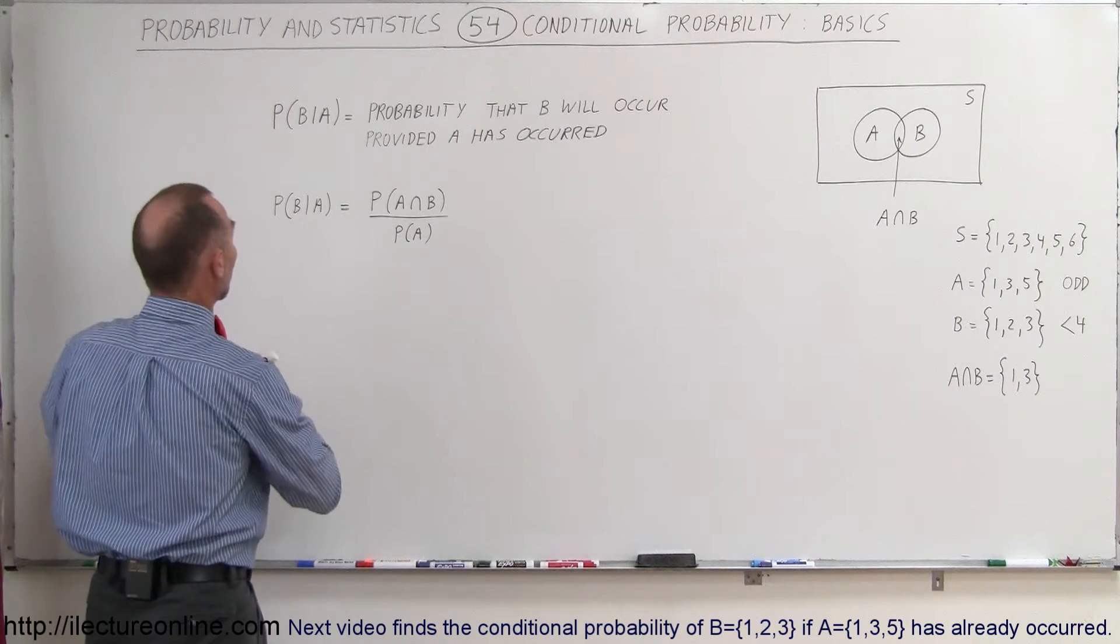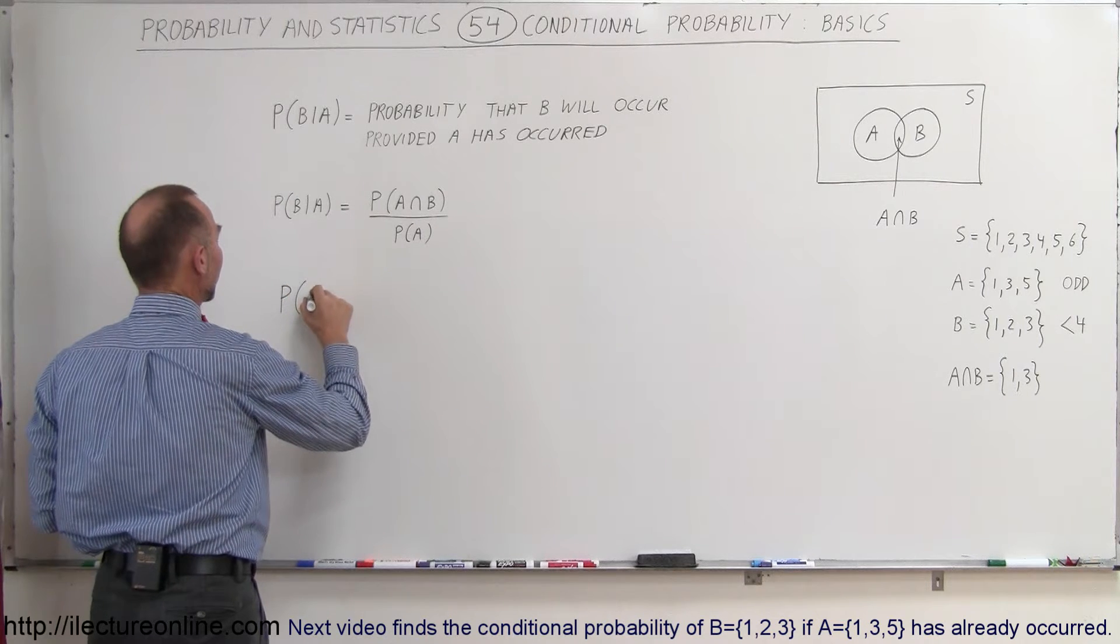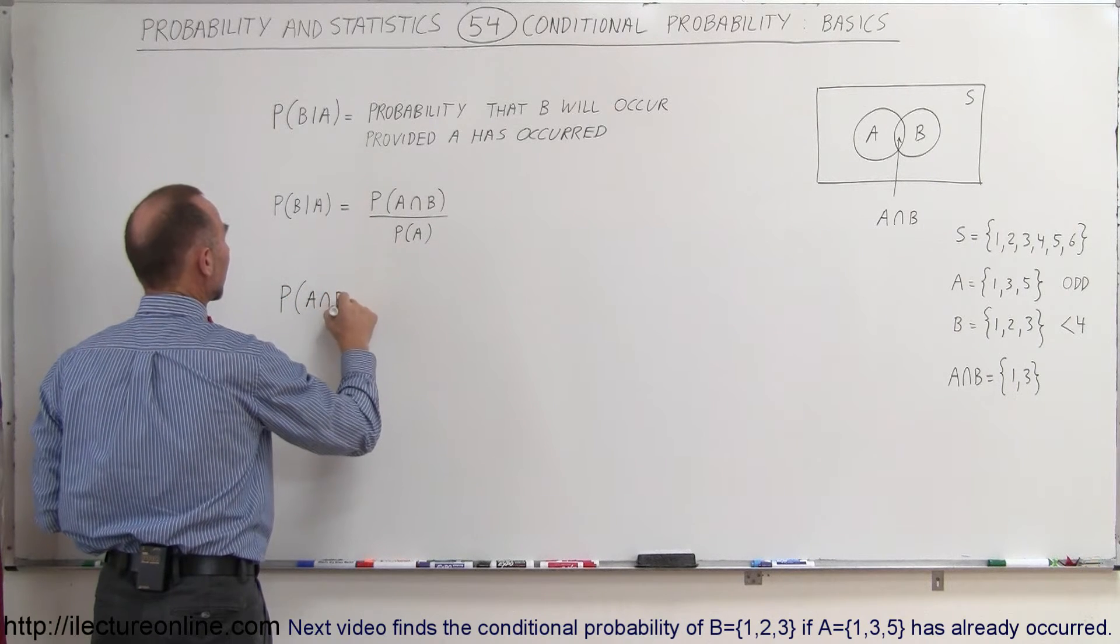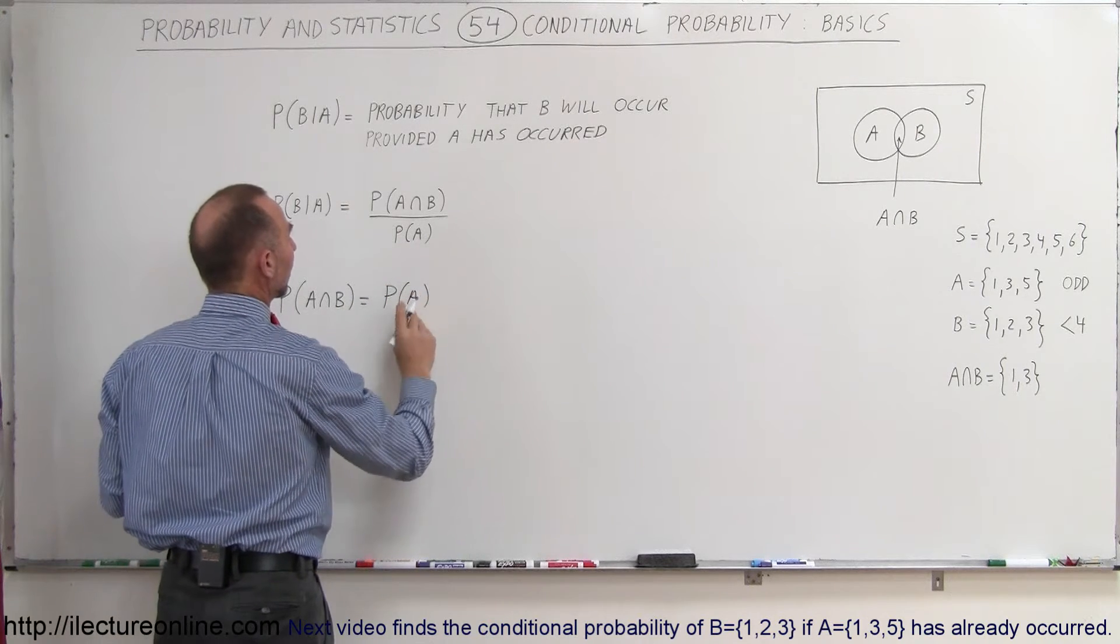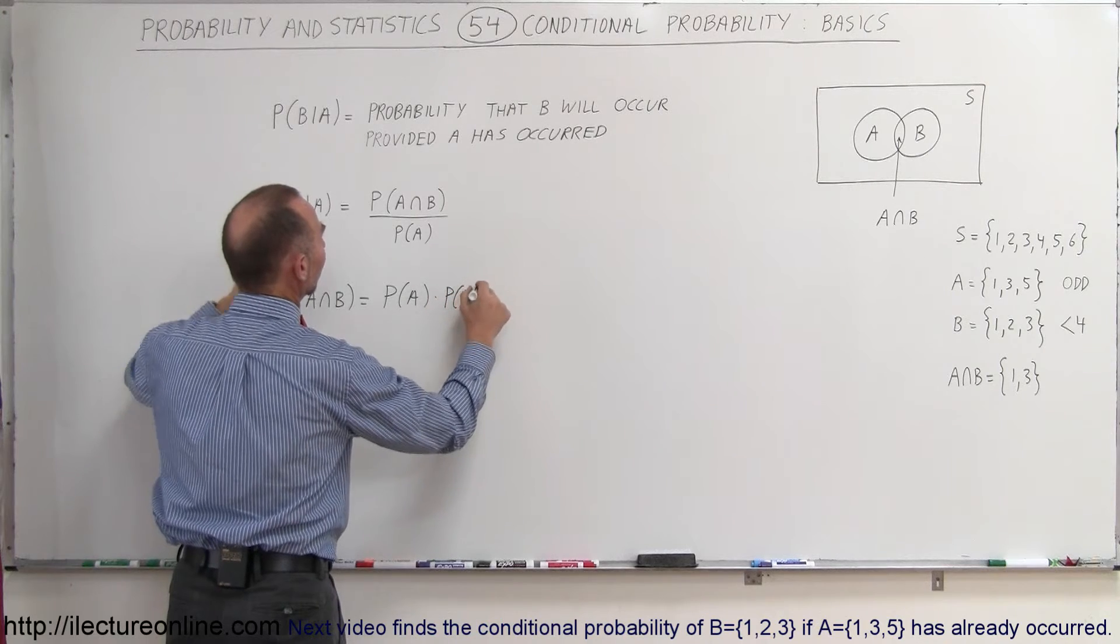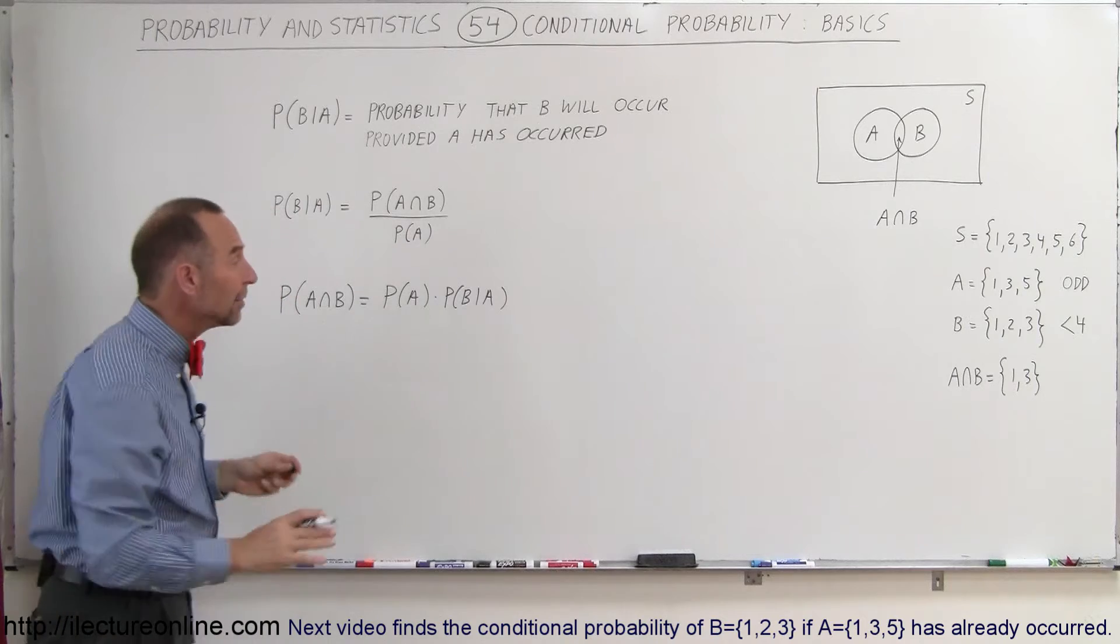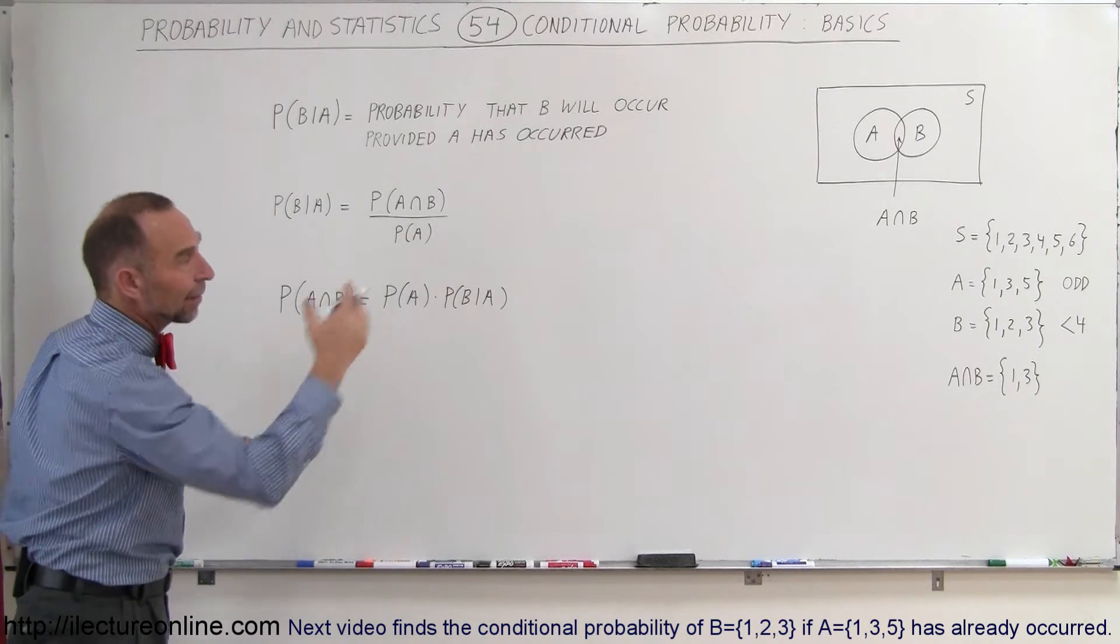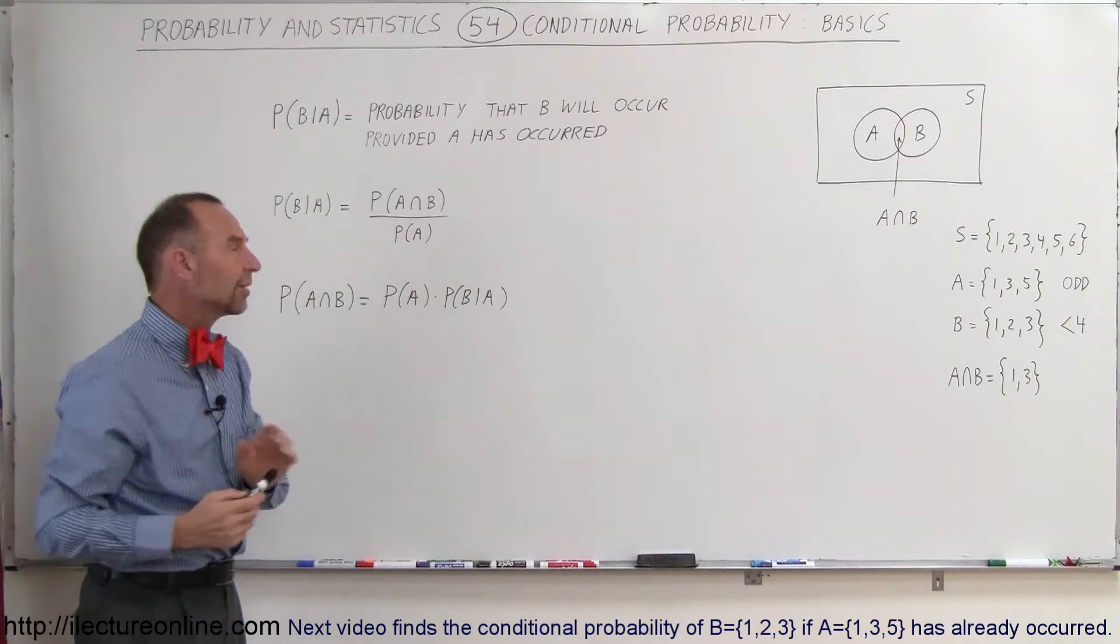You can then take that equation, turn it around, and also write it that the probability of the intersection of A and B is therefore equal to the probability that A will occur times the probability that B will occur provided that A has occurred. There's different ways of writing that, and you can see where that actually makes sense.